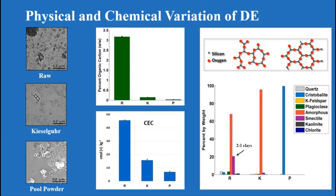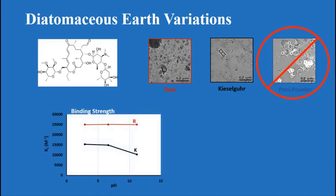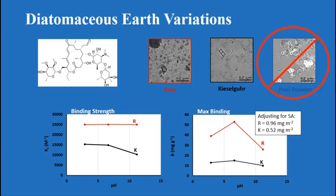After eliminating the pool-grade product, the effect of pH on the different grades was examined. The raw diatomaceous earth appeared almost independent of pH, but the lab-grade showed some decrease in binding when pH increased past 7. Based on that, it was decided to try adding alum — which lowers the pH of wastewater — to bring the wastewater to about pH 6.5 to try to maximize binding.